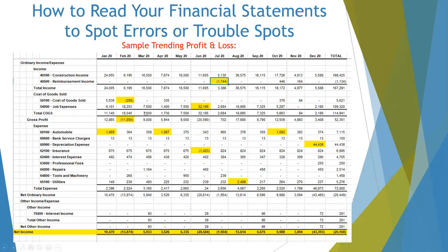Cost of goods sold should not be negative. Also, cost of goods sold was relatively consistent and then all of a sudden it shot up to $32,000 — that looks like a problem; it could be a trouble spot or just an error. Automobile expense is pretty consistent but jumps up in a couple of months, so we want to take a look at that. Depreciation looks like it was all recorded at the end of the year as one big expense — we want to spread that out during the year. Insurance expense is negative — maybe it was a refund, but it's something to look at. And utilities were pretty consistent and then jumped pretty dramatically.